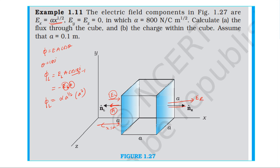For the right face, the electric field is directed to the right and the outward area vector is also to the right, so the angle between them is zero degrees, giving cosine zero equals one. At the right face, x equals 2a, so the electric field equals alpha times 2a to the power one-half. The flux through the right face equals alpha times 2a to the power one-half times a squared.